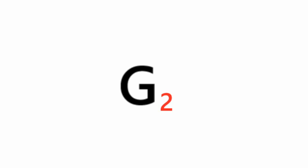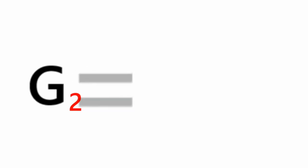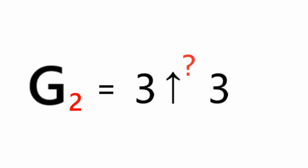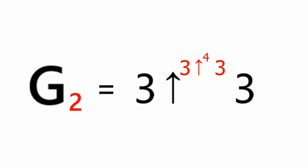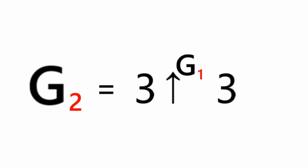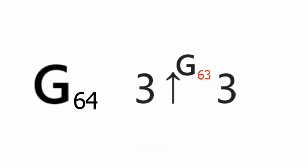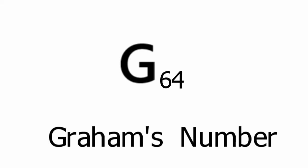After G1, we have G2. G2 is equal to 3 with G1 number of arrows to 3. G3 has G2 number of arrows. G4 has G3 number of arrows. You keep incrementing all the way to G64, which is 3 with G63 arrows to 3. G64 is Graham's number.